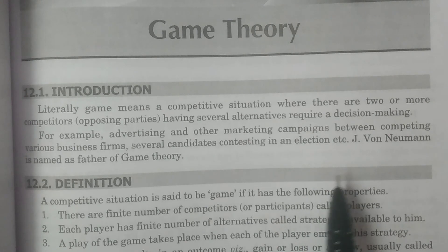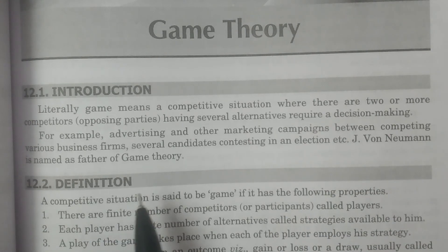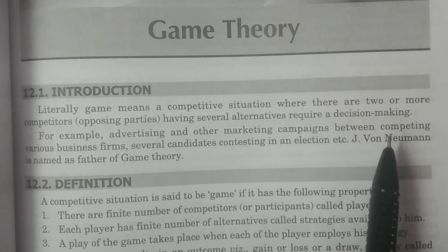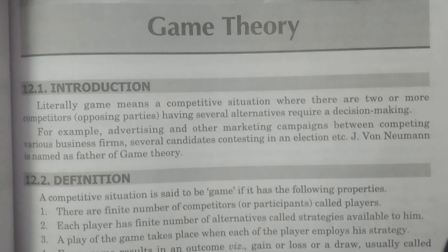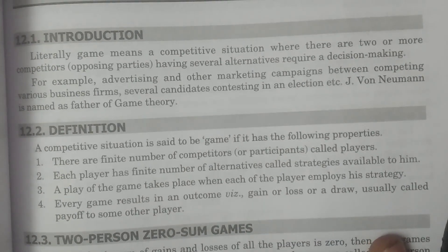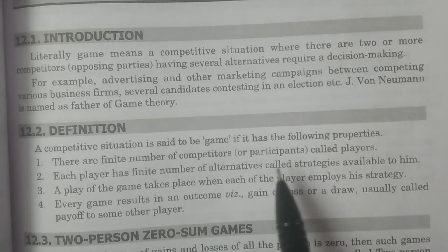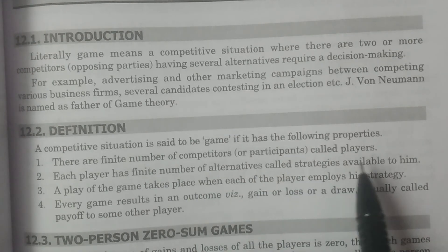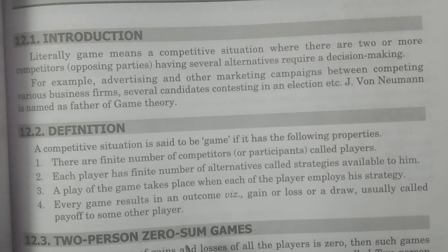Von Neumann is named as the father of game theory. What is a clear definition of game? A competitive situation is said to be a game if it satisfies the following four properties.